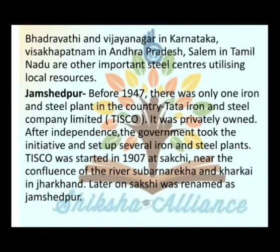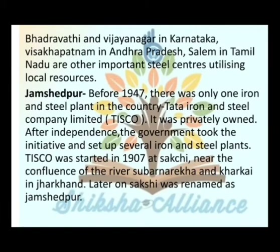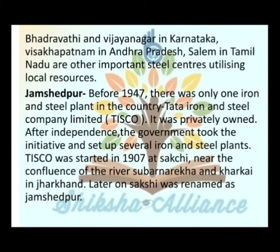Before 1947, there was only one iron and steel plant in the country — Tata Iron and Steel Company Limited (TISCO), which was privately owned. After independence, the government took the initiative to set up several iron and steel industries in different locations. TISCO was started in 1907 at Sakchi, near the confluence of the rivers Subarnarekha and Kharkai in Jharkhand. Later, Sakchi was renamed Jamshedpur.